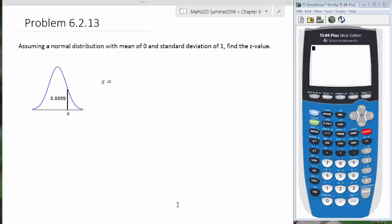This is a problem from section 6-2, a problem similar to your homework. It says, assuming normal distribution with a mean of 0 and standard deviation of 1, find the Z value. And the Z value is this Z value down here where they give us the area on the left-hand side.